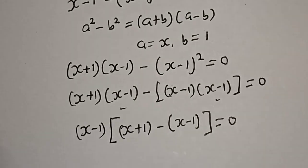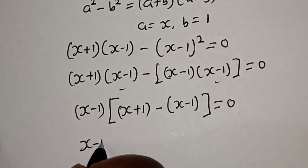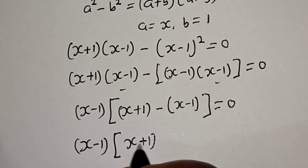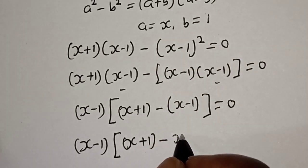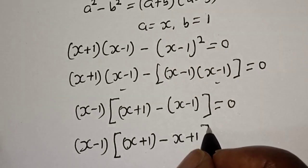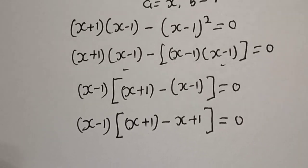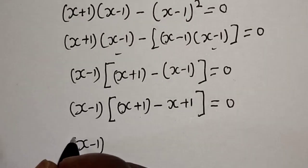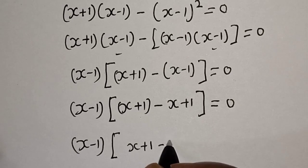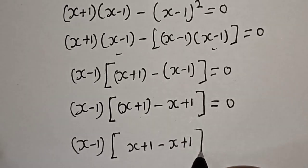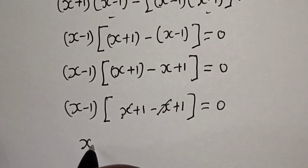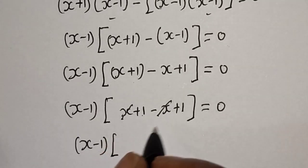is equal to 0. And we have (x minus 1) bracket, this is (x plus 1) minus times this x we have x, minus times minus 1 we have plus 1, is equal to 0. So this is (x minus 1) bracket (x plus 1) minus x plus 1 is equal to 0. So here this one will cancel this. We have (x minus 1) bracket 1 plus 1, that is 2, is equal to 0.